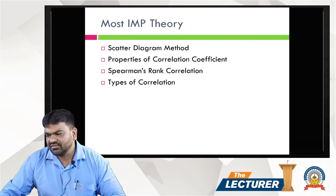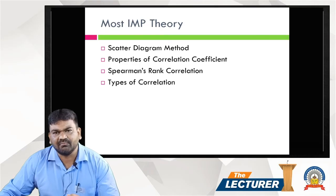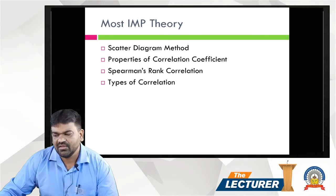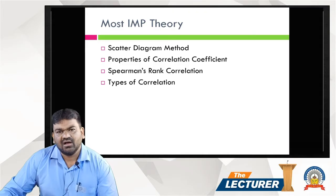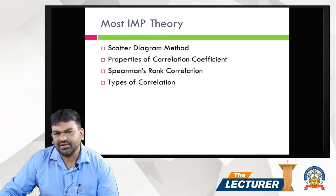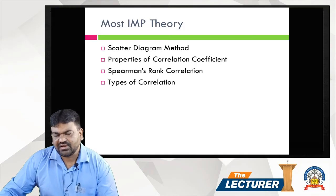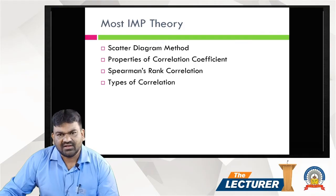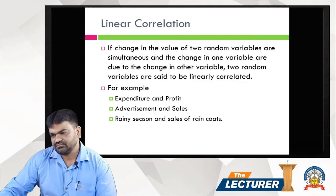Most time in theory — we will find the same exam topics in our theory. In the exam, 99.99% of questions come from theory. The first theory topic is Scatter Diagram. Correlation is a basic method. Second is Properties of Correlation Coefficient. Third is Spearman's Rank Correlation Coefficient. And last is types of correlation.